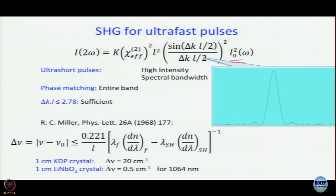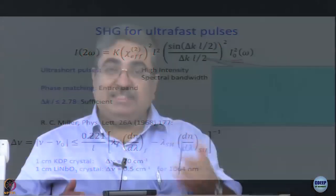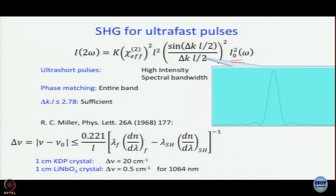We are back. Which is better while working with ultrashort pulses — KDP or lithium niobate? KDP is better. The problem is that if Δν is more than 20 cm⁻¹, you will not get second harmonic generation for KDP, but if Δν is more than 0.5 cm⁻¹, you will not get second harmonic generation for lithium niobate. And we know that the characteristic of an ultrashort pulse is a large bandwidth.